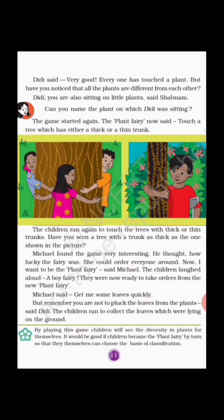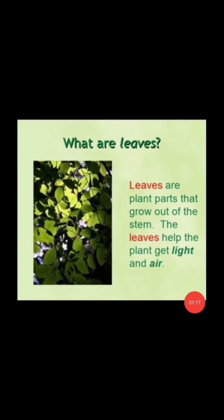Leaves are a colourful part of the plant — the green colour part. Leaves are not only green; they can differ in colours like red, green, yellow, etc. Leaves are basically the plant part that grow out of the stem, and they grow on branches. The leaves help the plant to get light and air.